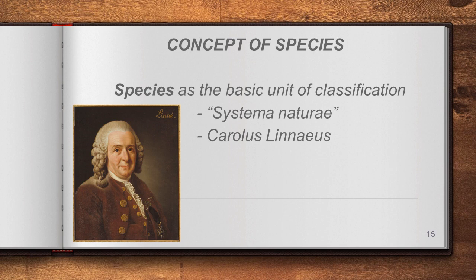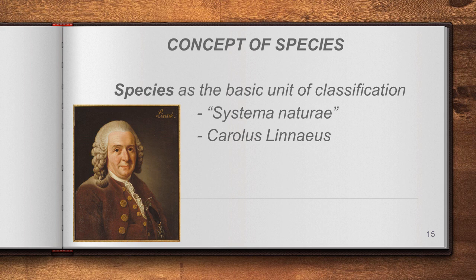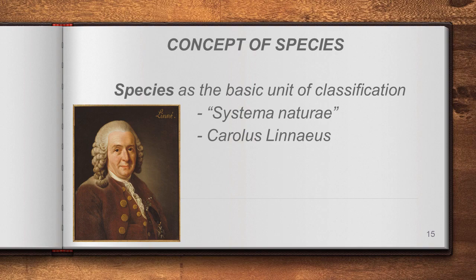The next definition is by Carolus Linnaeus in his book Systema Naturae. Being the father of taxonomy, he defined species as the basic unit of classification. According to him, classification is made at the species level — only when we assign a species name can we exactly identify one particular species.